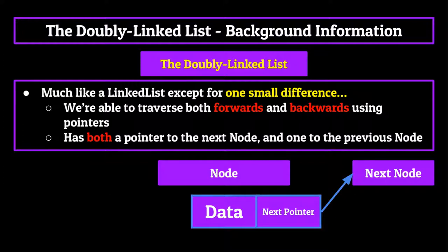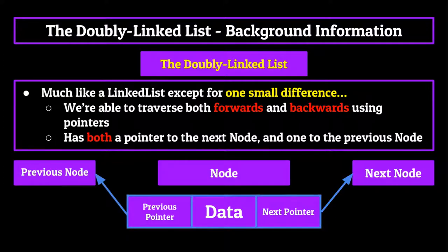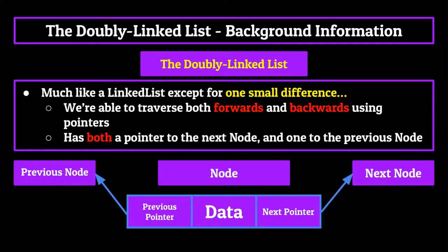A doubly linked list simply builds upon this idea by also having a pointer which points to the previous node in the linked list. It's a go-backwards button of sorts, which allows you to fluidly go through the linked list in either direction instead of just limiting yourself to one. This allows us to jump around the linked list and have a little bit more flexibility when working with information.